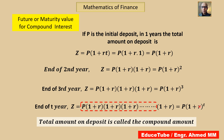The important distinction between the two formulas is that in simple interest, T is a multiplier, while in compound interest, T is an exponent. Because T is an exponent, money grows much more rapidly when interest is compounded.